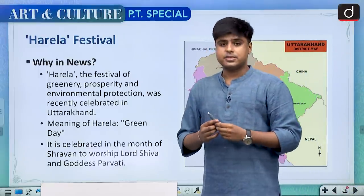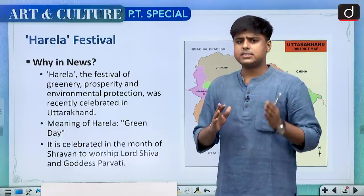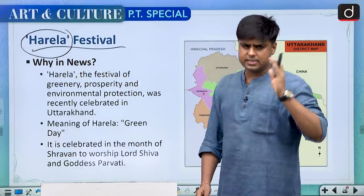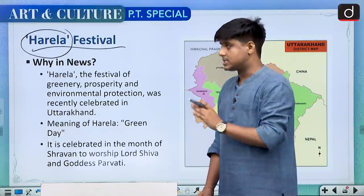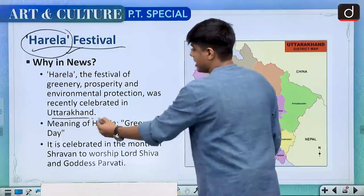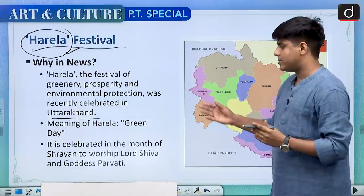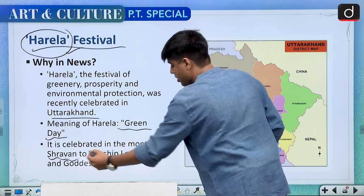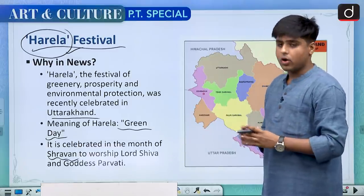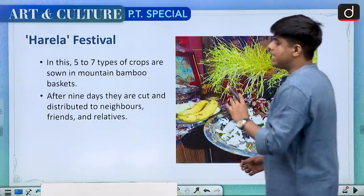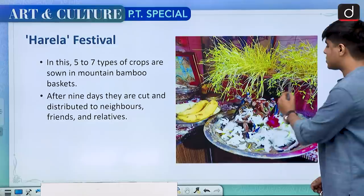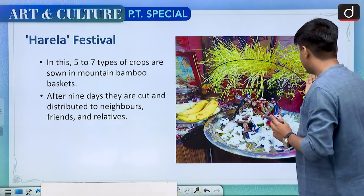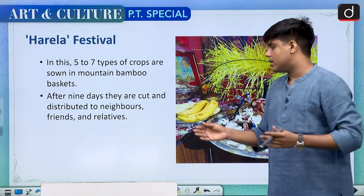Moving on to certain festivals, the most important are harvest festivals followed by certain important state festivals. Harela festival was in news — remember the word Harela, because there is a similar word Hareli which is a festival celebrated in Chhattisgarh, while Harela festival is celebrated in Uttarakhand. It is a festival of greenery, prosperity and environment protection, and the word Harela literally means Green Day. It is celebrated in the month of Shravan or Savan, in which Lord Shiva and Goddess Parvati are venerated. Five to seven crops are sown in mountain bamboo baskets, and after nine days it is cultivated and then distributed among neighbours, friends and relatives.